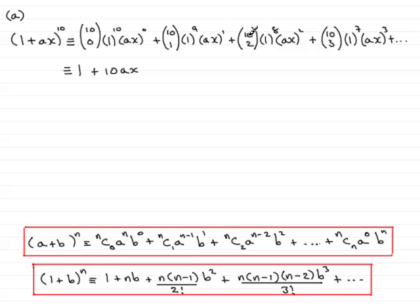Then we have 10C2, so you can work that out in your calculator. And you'll find that you get 45. So you end up with 45 A squared X squared.